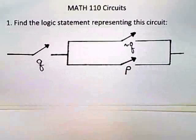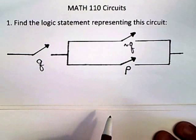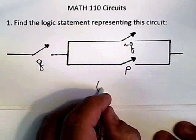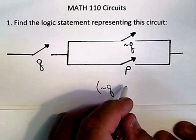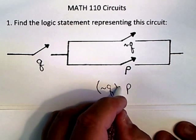So I know that because these two are above each other, those are parallel circuits. Yeah, parallel circuits. So I take the two statements, not Q and P, and because they're parallel, I know that that is an OR.